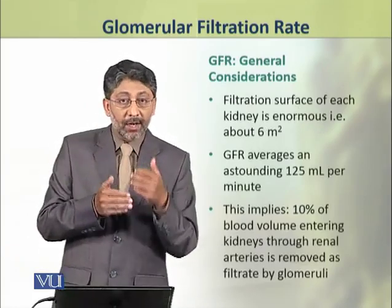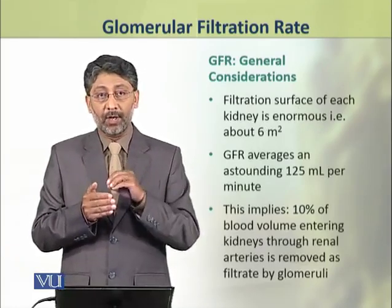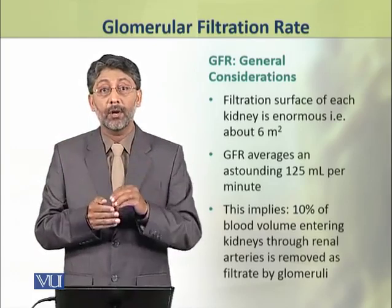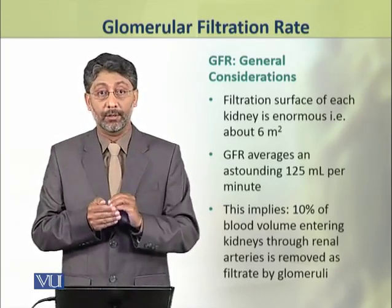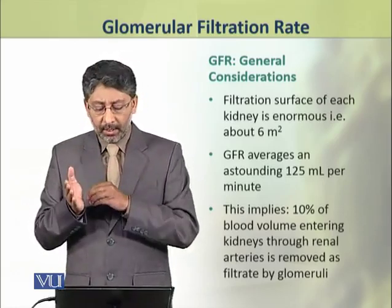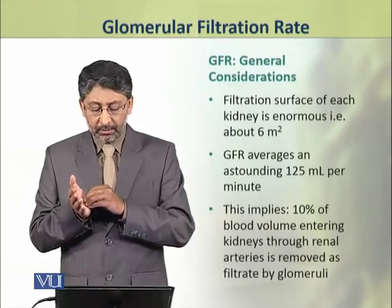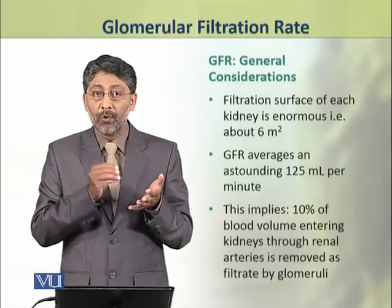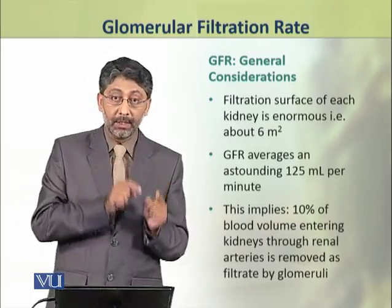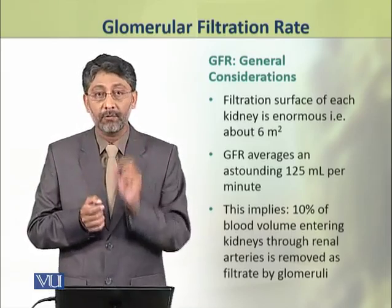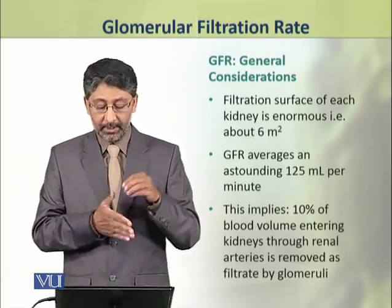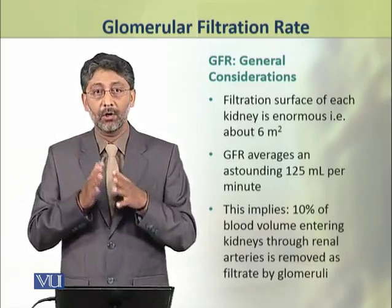First, we shall discuss some general features of the glomerular filtration rate. The filtration surface of each kidney is enormous — about 6 square meters in area. Through this surface, the filtration by each kidney is about 125 milliliters per minute. This means that about 10% of the blood volume that enters each kidney through the renal arteries is removed as filtrate by the glomeruli.